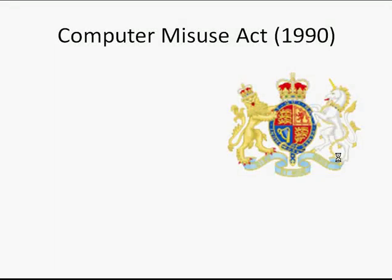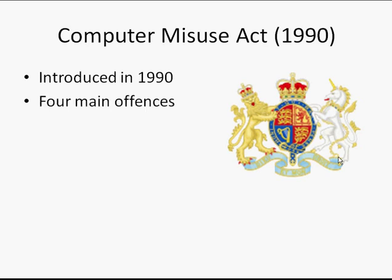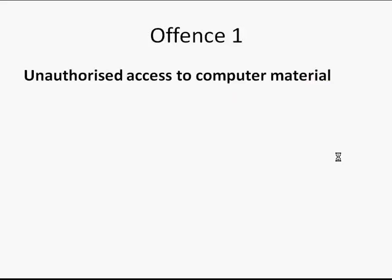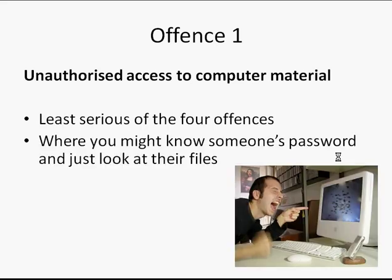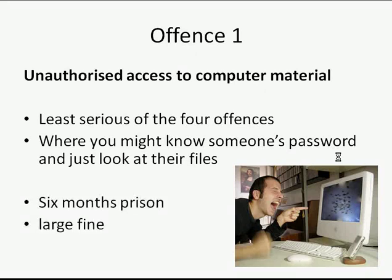The Computer Misuse Act was brought in in 1990 to help stop things like hacking. There were four main offenses involved in it. The first one is called unauthorized access to computer material. It's the least serious of the four offenses and it's where you might just know someone's password and look at their files. In theory, you could get six months prison and a large fine.